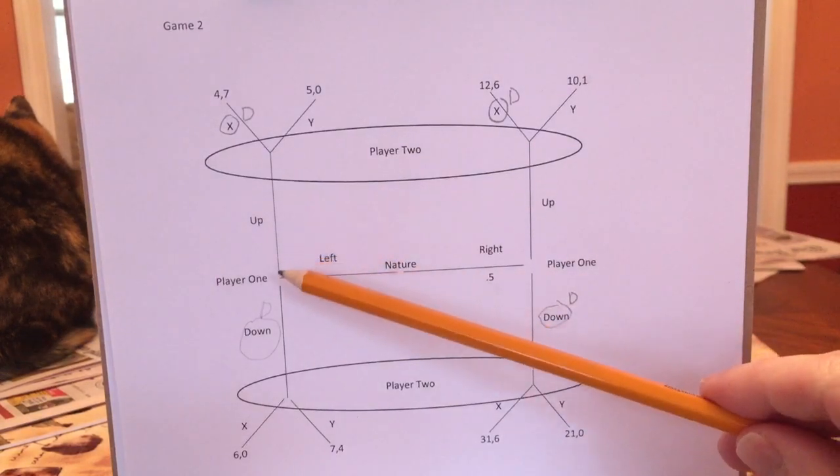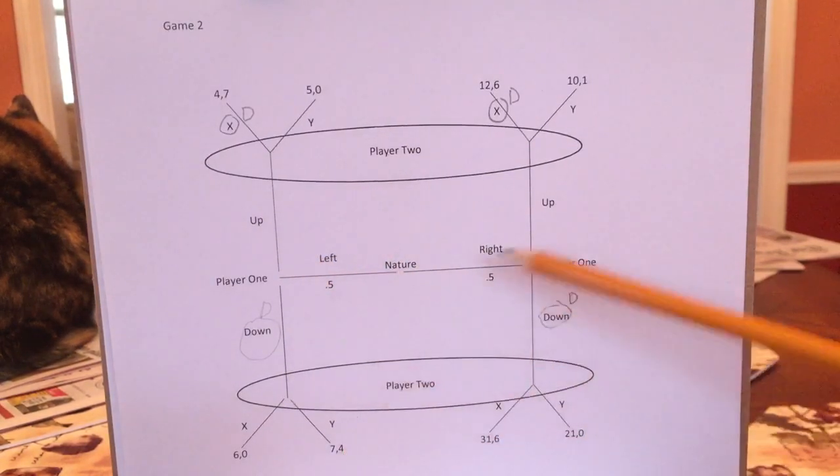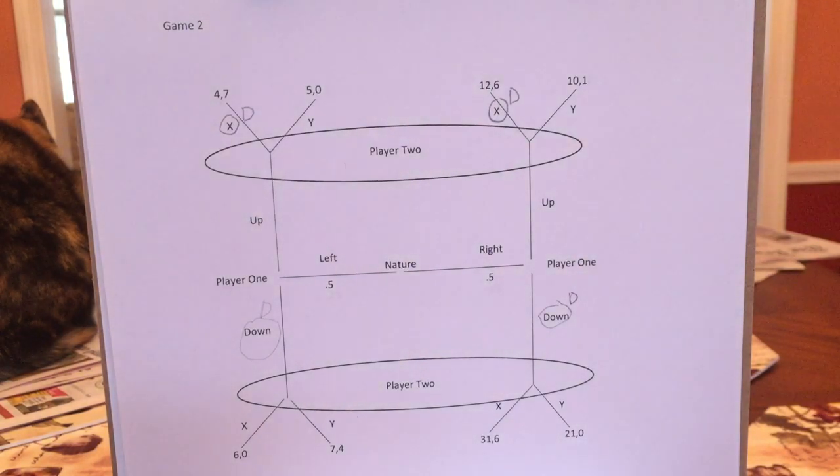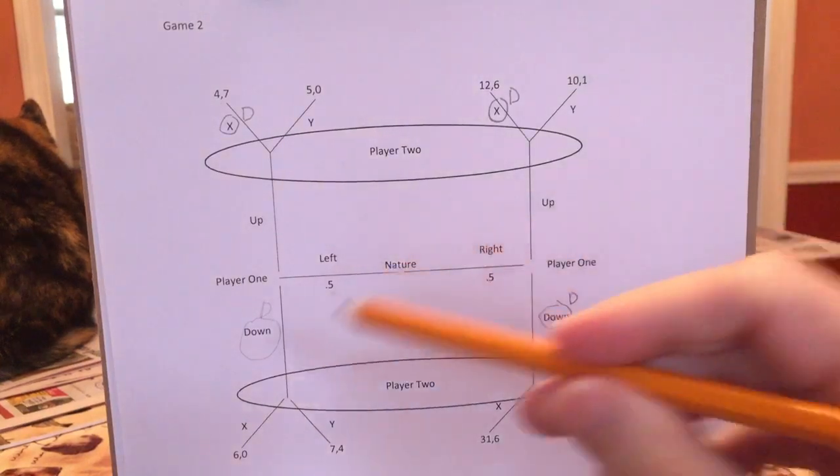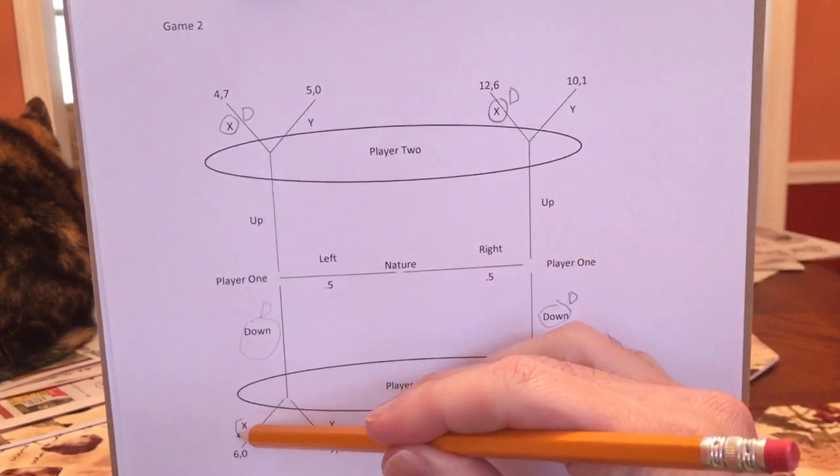And if I play y, half the time I'm here, and I get 4, and half the time I'm here, and I get 0. So if I play y, get 4 half the time, 0 half the time, on average I get 2. 3 is better than 2. So Player 2, after down is played, is going to go with x.